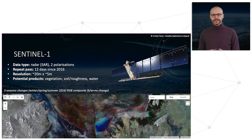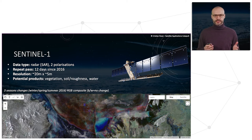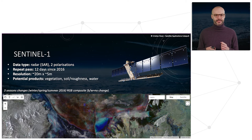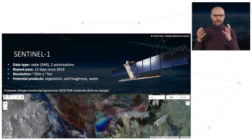Moving to SAR data, Sentinel-1 is a radar mission with two polarizations. The repeat pass is 12 days since 2016, and the resolution is approximately 10 meters on average — more precisely around 20 meters by 5 meters, as it's not a square pixel.